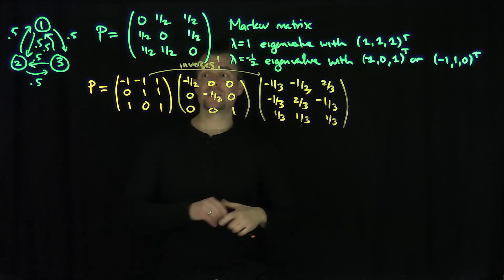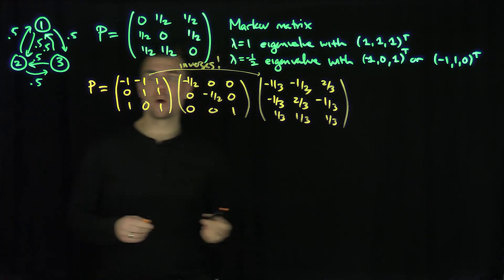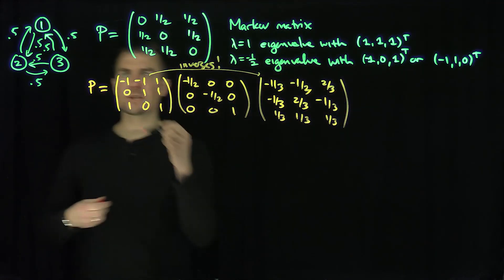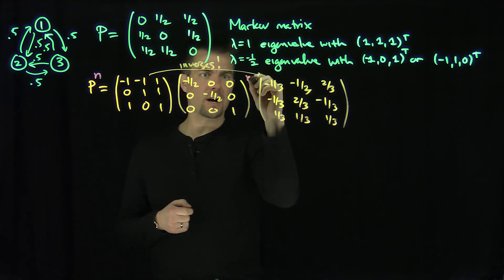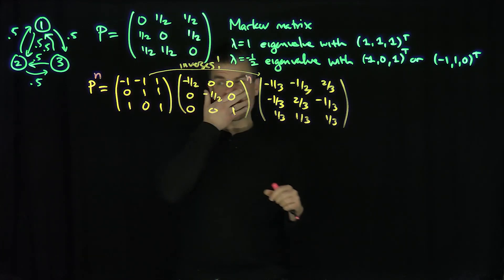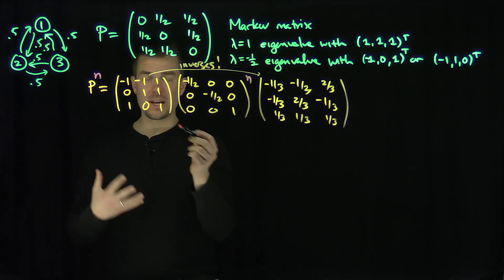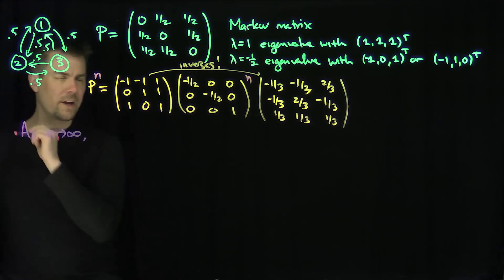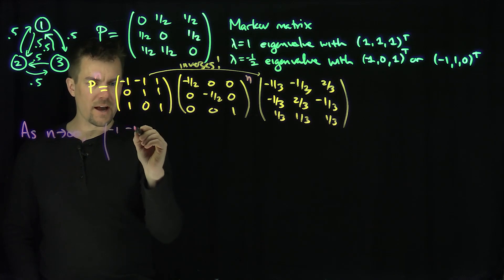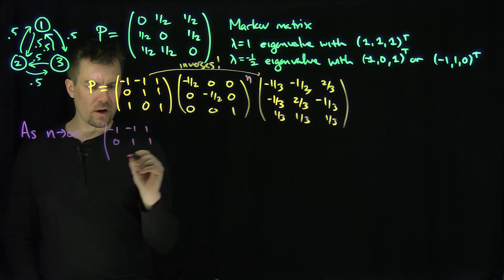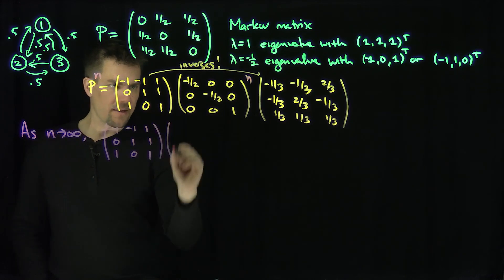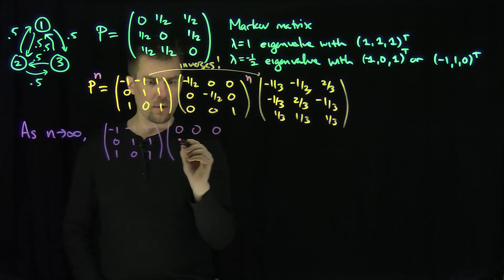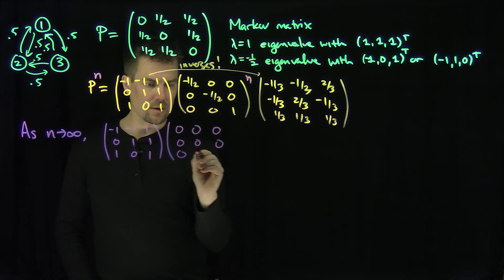That's my diagonalized structure. Now I can note that P to the power N: for diagonalized matrices, it just raises the diagonal matrix to the power N. As N goes to infinity, the entries (-1/2)^N go to 0. So the diagonal matrix goes to [0, 0, 0; 0, 0, 0; 0, 0, 1].